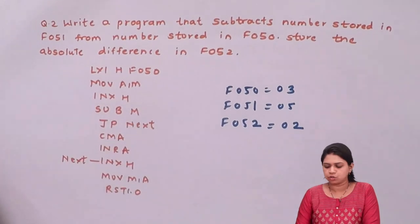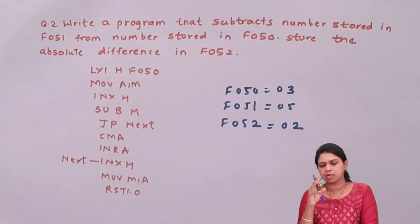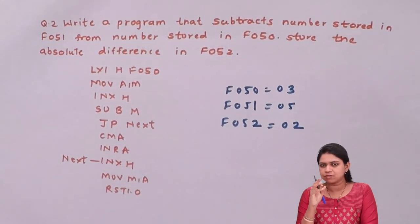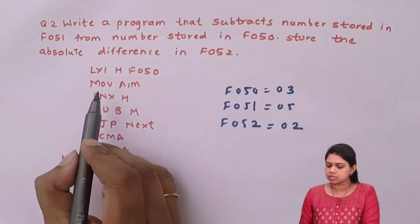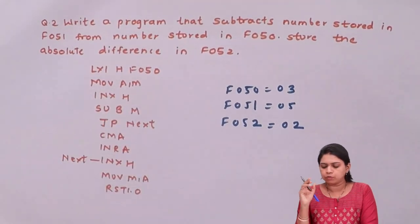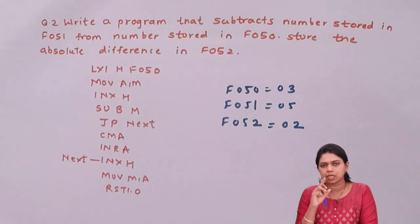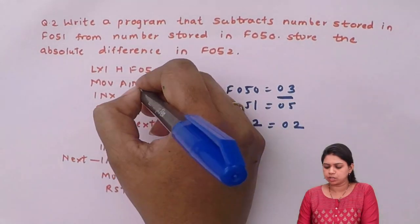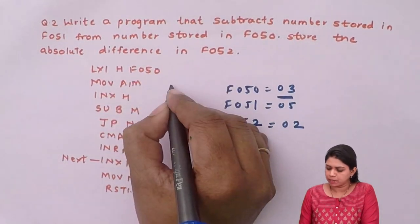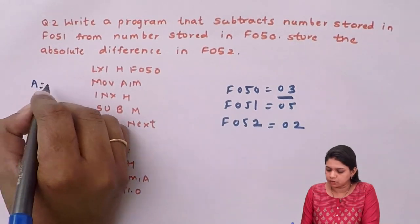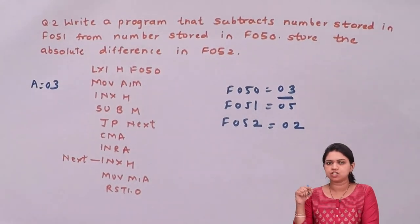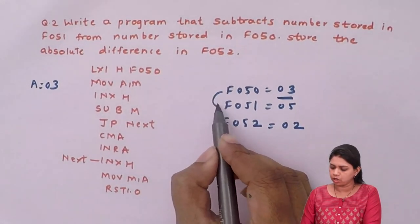LXI H, F050 — I initialize the HL pair with memory location F050. In F050, I have the number 03. Next, MOV A, M moves the number at the memory location pointed by HL into the accumulator, so the accumulator becomes 03. Next is INX H, which increments the HL pair, moving to F051.